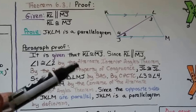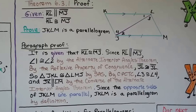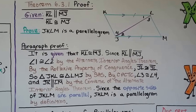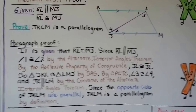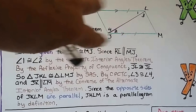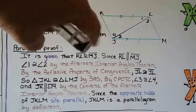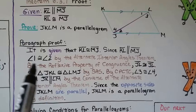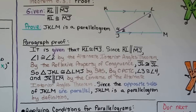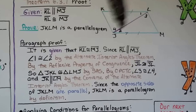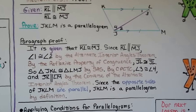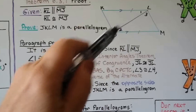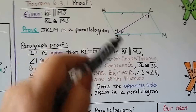It is given that segment KL is congruent to segment MJ. Since KL is parallel to MJ, we can look at JL as a transversal, making angles 1 and 2 alternate interior angles — so angles 1 and 2 are congruent by the alternate interior angles theorem. By the reflexive property of congruence, JL is congruent to JL. So triangle JKL is congruent to triangle LMJ by side-angle-side (SAS) — we have the shared side JL, the alternate interior angles, and side KL congruent to MJ.